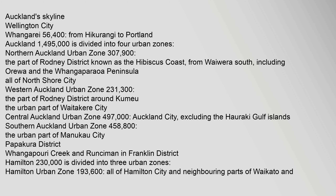Auckland 1,495,000 is divided into four urban zones: Northern Auckland urban zone 307,900, covering the Hibiscus Coast from Waiwira South including Orewa and the Whangaparaoa Peninsula, and all of North Shore City. Western Auckland urban zone 231,300, covering part of Rodney district and the urban part of Waitakere City. Central Auckland urban zone 497,000, covering Auckland City excluding the Hauraki Gulf Islands. Southern Auckland urban zone 458,800.